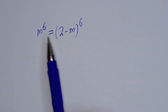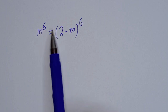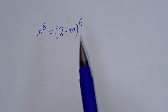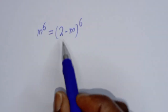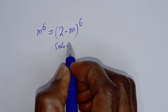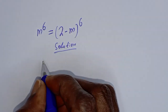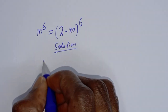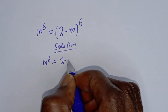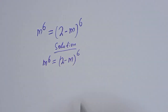Hello. How to solve for m from this given equation: m raised to power 6 is equal to 2 minus m raised to power 6.